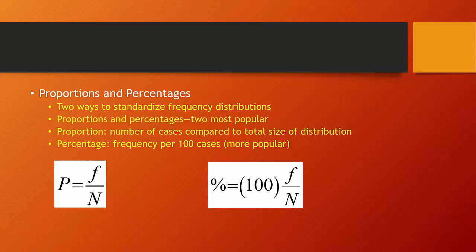Proportions and percentages are probably the two most popular methods of doing so. A proportion is the number of cases in a given category compared to the total size of the distribution, or the total number of observations.